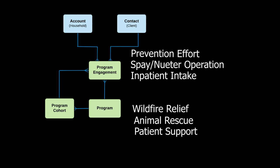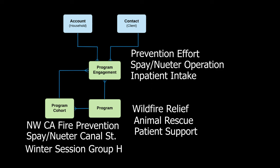The Program Cohort object records groupings of program engagements based on location, date, or whatever is meaningful to our organization. Examples could be anyone enrolled in the winter session of a support group, or everyone who receives services at a specific branch.